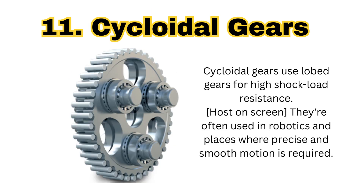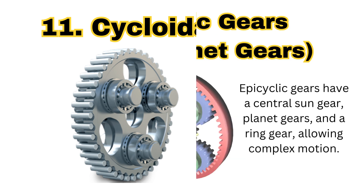The next type of gear is the cycloidal gear. Cycloidal gears use a lobed gear for high shock load resistance. They are used in robotics and places where precision and smooth operation are required.